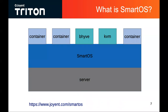SmartOS, being the operating system that we run on, is a way of hosting virtual machines. Those virtual machines can be containers — lightweight containers where you're sharing the resources of the underlying kernel — or they can be Type 2 hypervisors like Bhyve or KVM, where you can run your own instance of a kernel and that will get virtualized by SmartOS underneath it. Bhyve and KVM can run different operating system images like Linux or Windows. The containers are the ones we're most interested in when talking about deploying Triton and Manta.